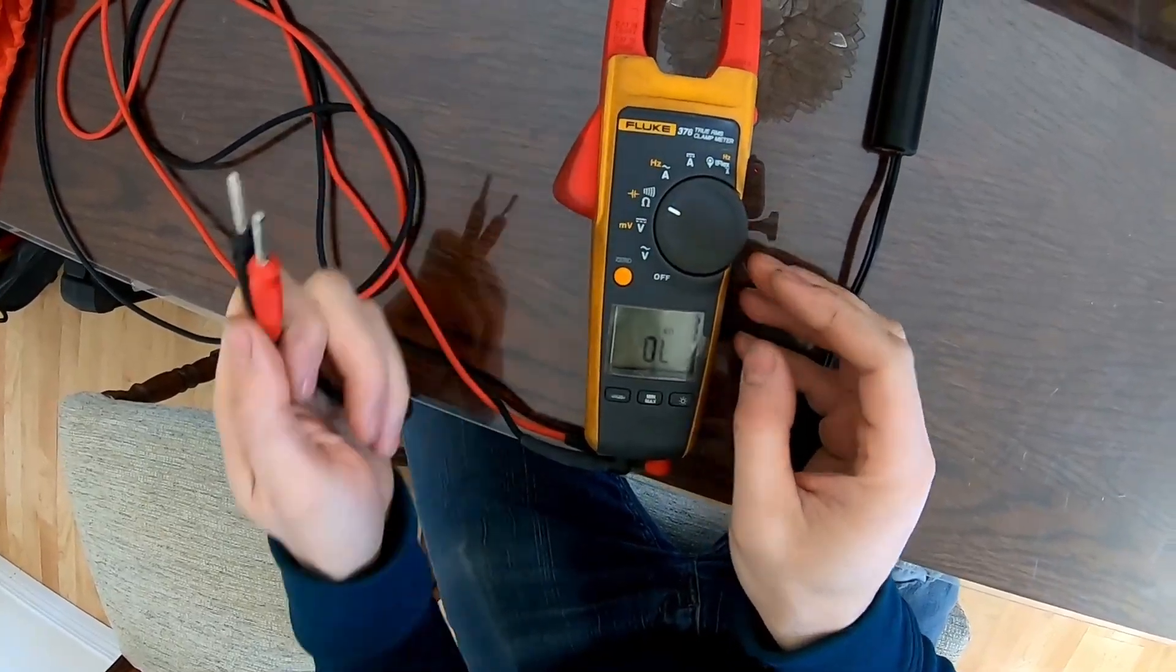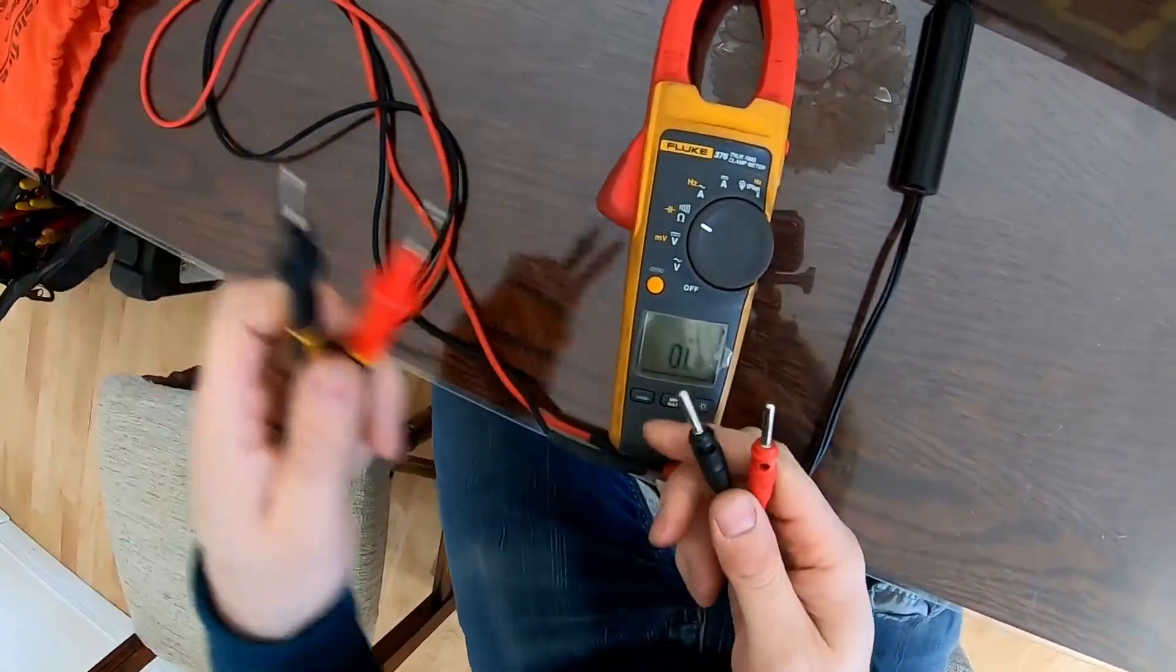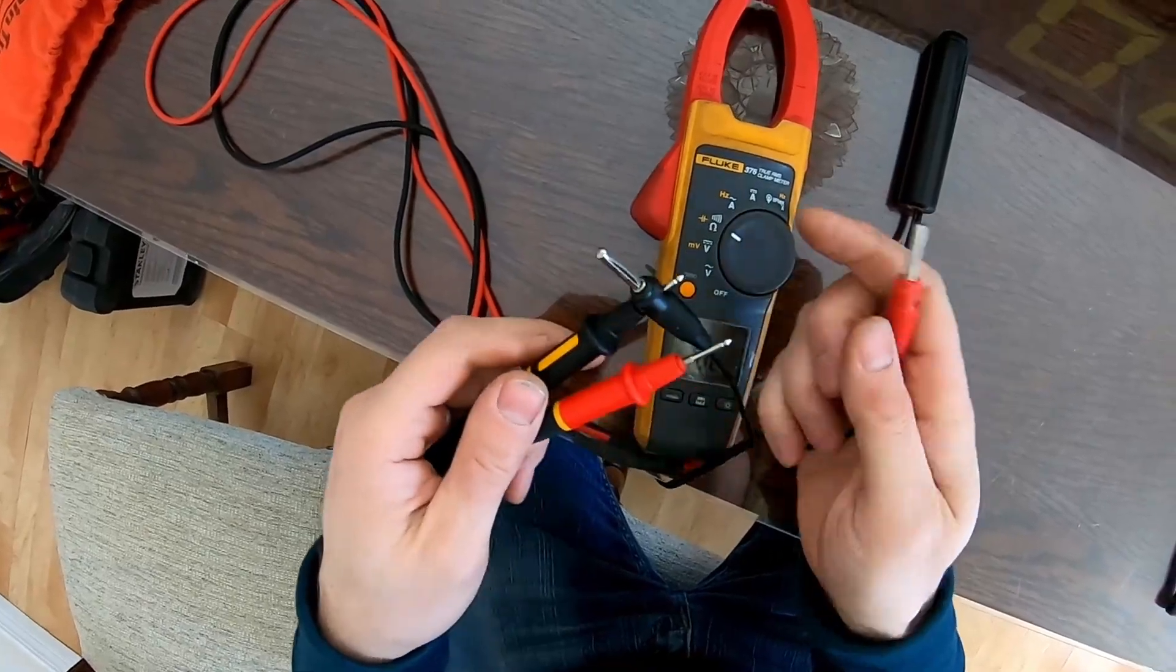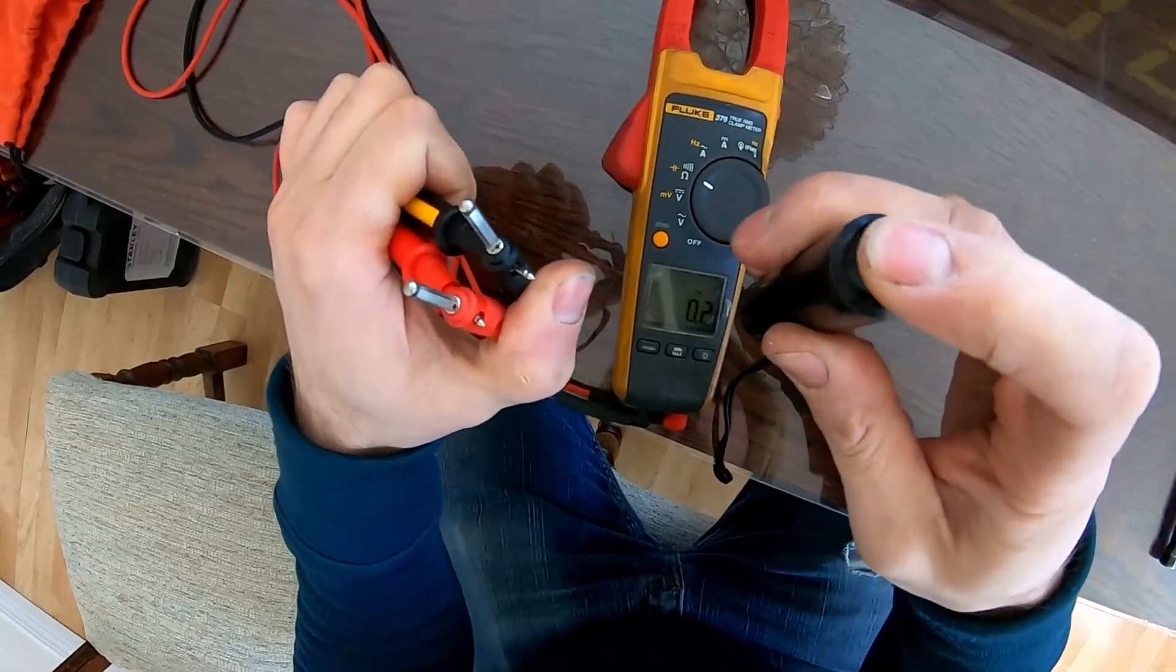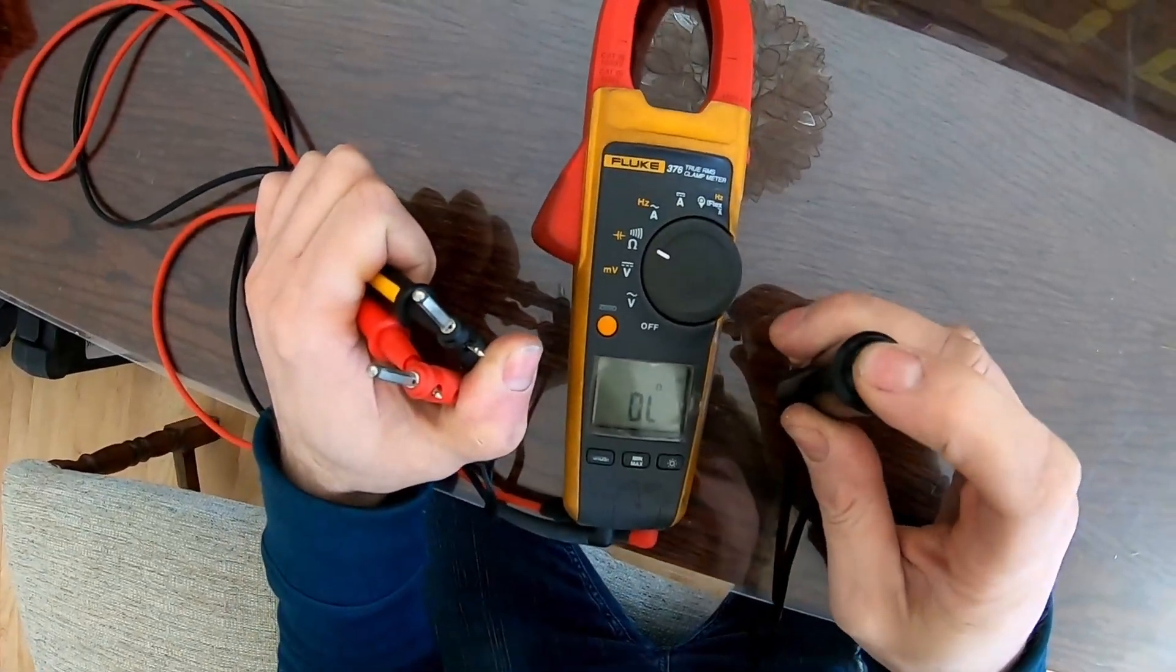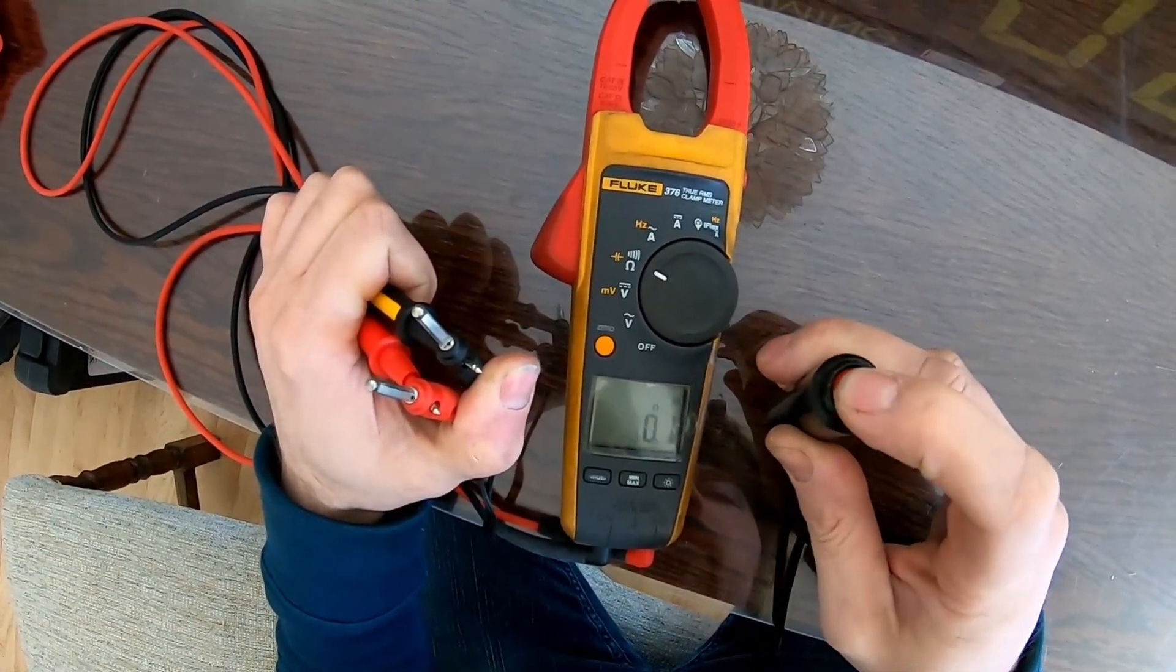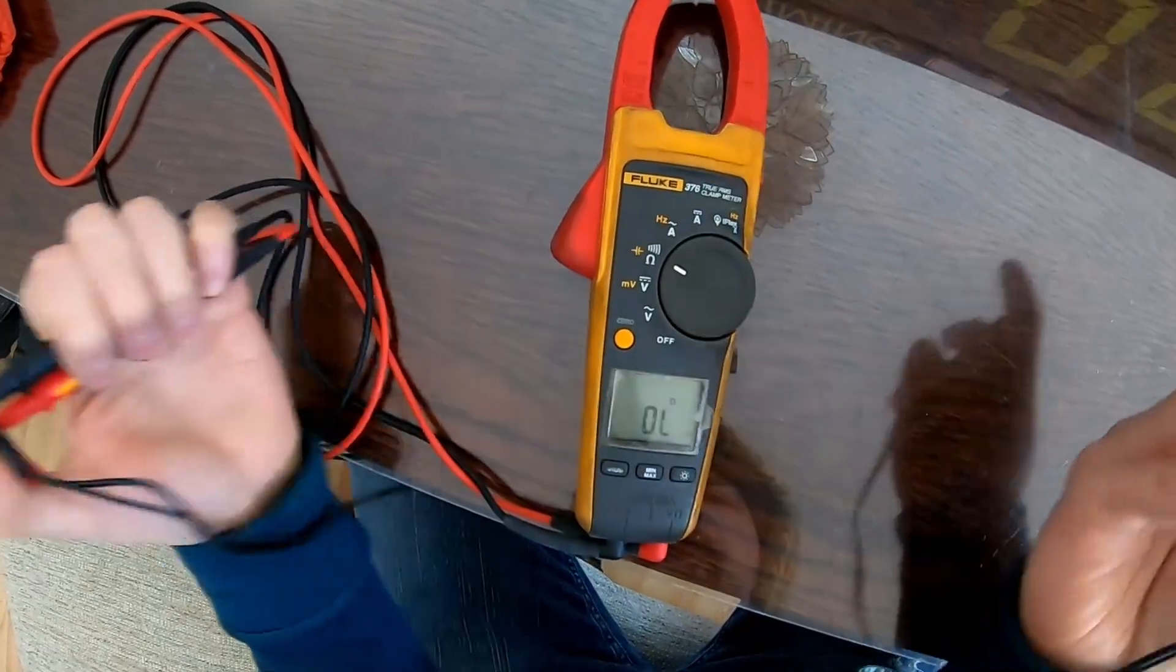You can test that by setting your meter to resistance. All you gotta do is put your test leads in here like this. Hold that with your one hand and if your meter indicates continuity then you know that the plunger is working.